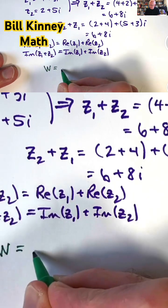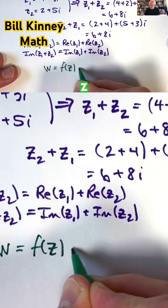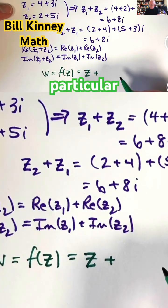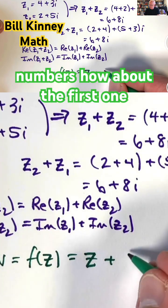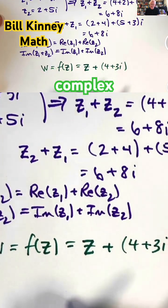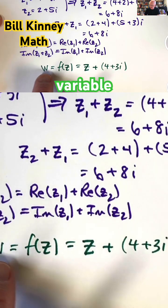I'm going to write W equals f of Z equals Z plus, let's take one of these particular complex numbers. How about the first one? 4 plus 3i, and say that I can think of this as a complex function of a complex variable.